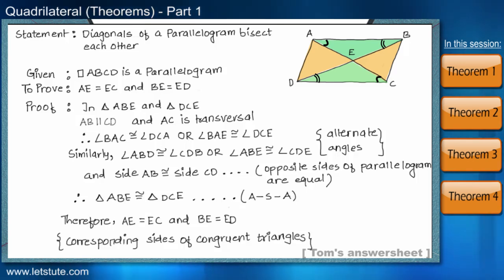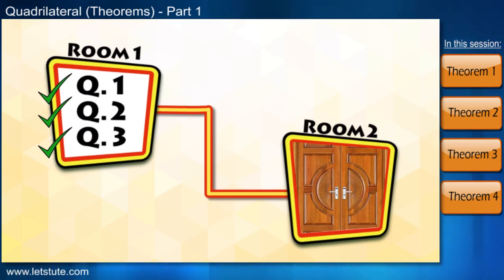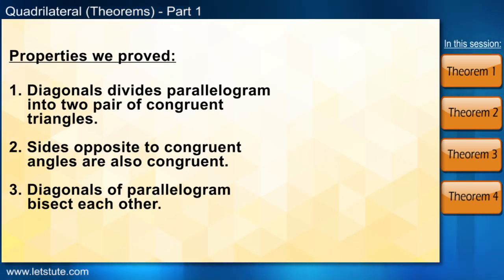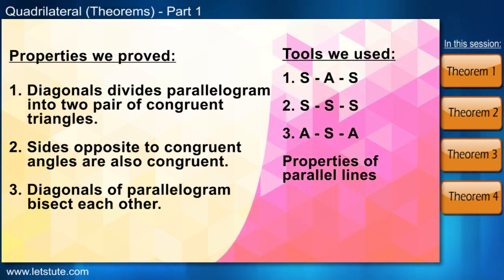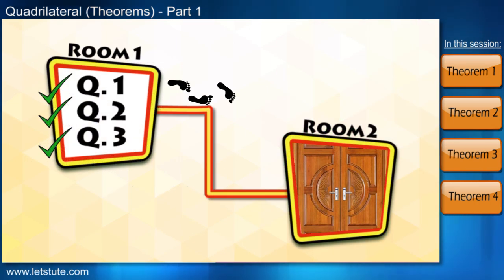So that, triangle AEB is congruent to triangle DEC. By using angle side angle criterion. We can draw one more conclusion that, when a parallelogram is divided diagonally into four parts, two pairs of opposite triangles are congruent. Tom has finished all the questions of the first stage successfully. And he realized while solving these questions that, it's easy to prove the properties of quadrilaterals or theorems by using some tools. These tools being the prerequisite knowledge on geometry that motivated him to move towards the second stage.